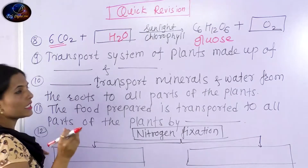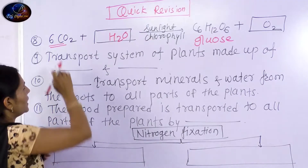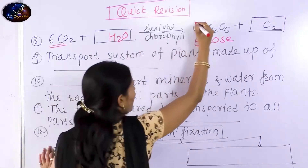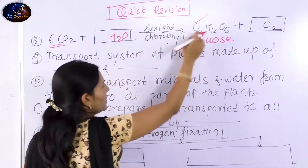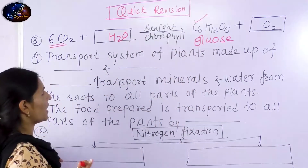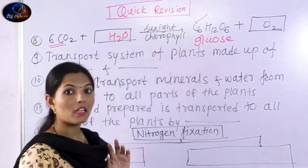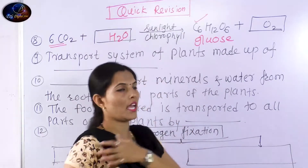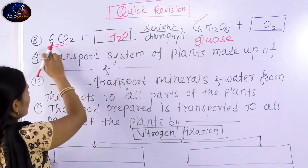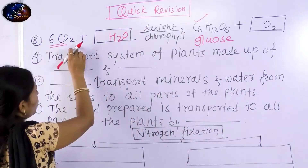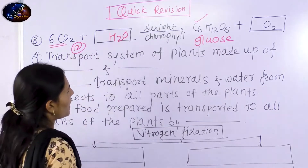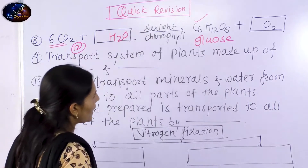How many carbon dioxide molecules? 6 — that gives us C6. This is a balanced reaction. It is very good to do a balanced reaction.